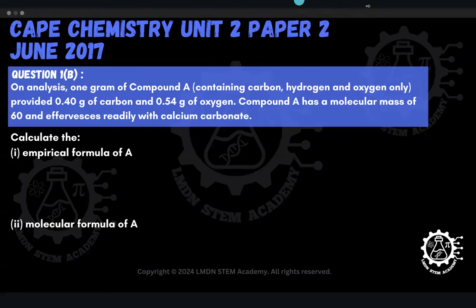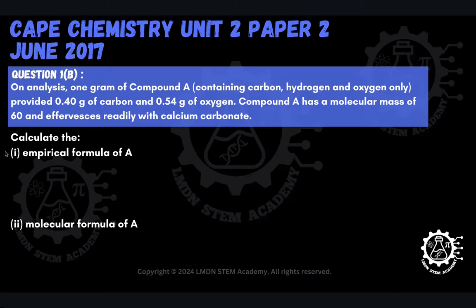Let's look at all the information that we have and put that together in a form that would enable us to first find the empirical formula. If we look at all the information we've been given, we can see immediately that we have three elements that make up the compound. We have carbon, hydrogen, and oxygen. That's it, there's nothing else.